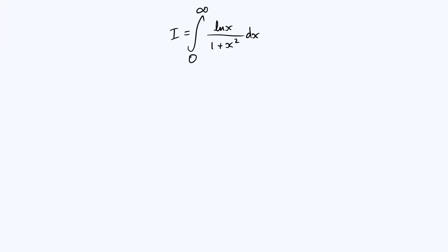Hi everyone, let's take a look at the integral from 0 to infinity of the natural log of x over 1 plus x squared with respect to x, and we are going to use two separate substitutions to show that this integral is in fact 0. So let's make a start.